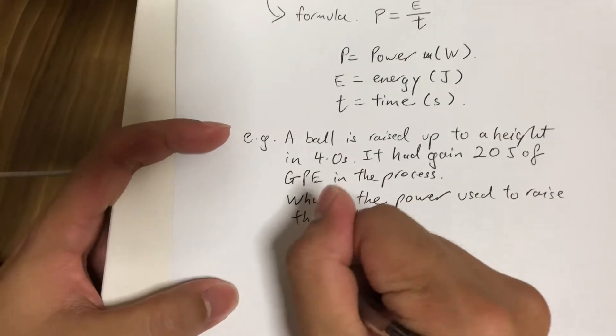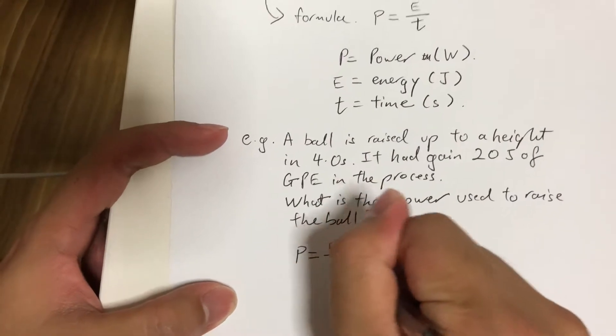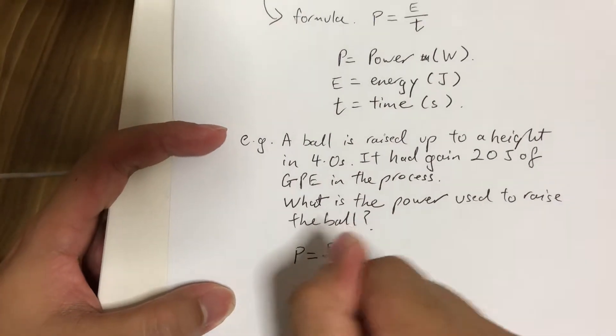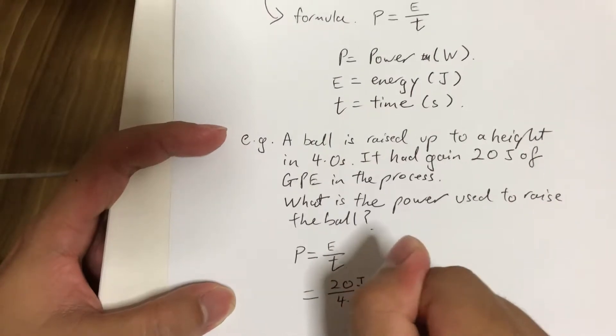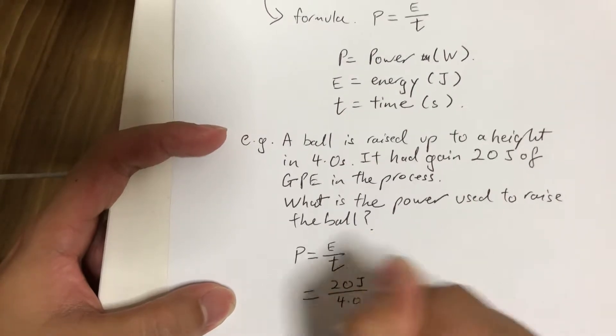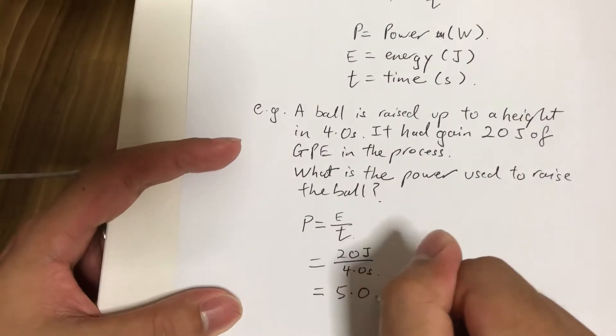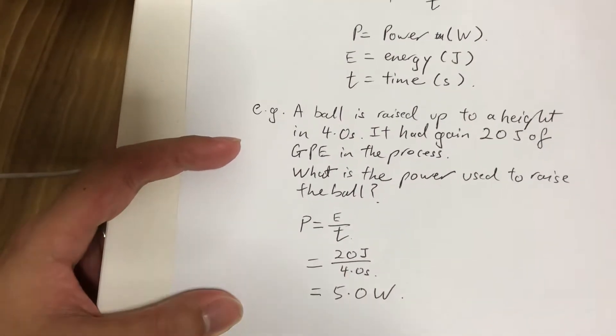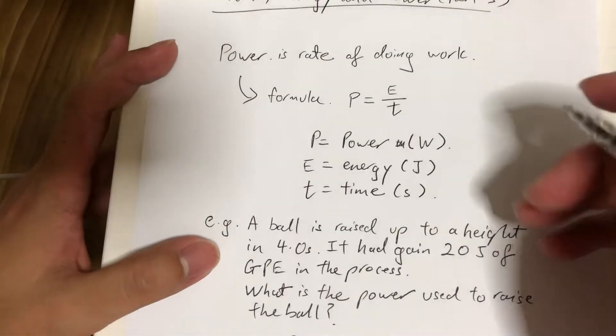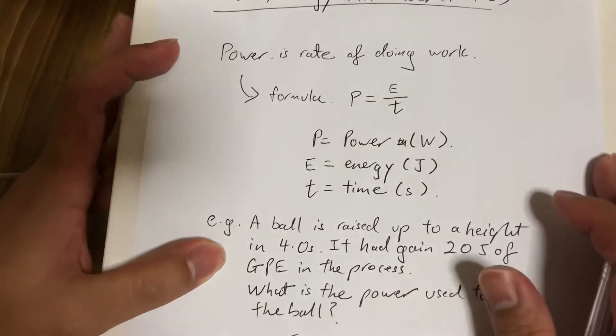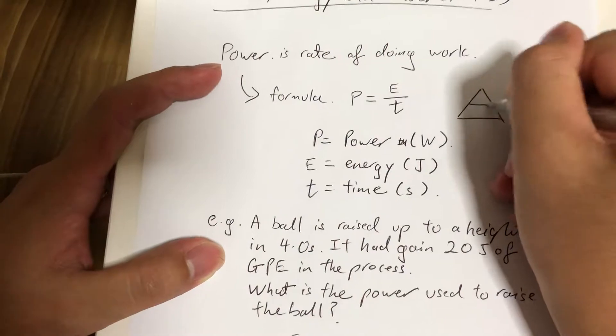For those who are done, you realize that using the formula power equals energy divided by time, we will just substitute 20 divided by 4 seconds. This will give us 5.0 watts, very straightforward. For those who find memorizing this formula difficult, some of you might prefer this triangle.